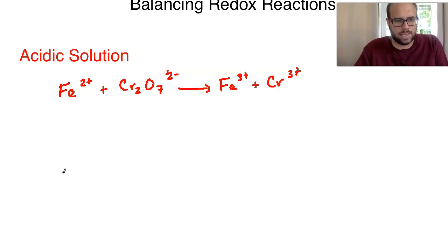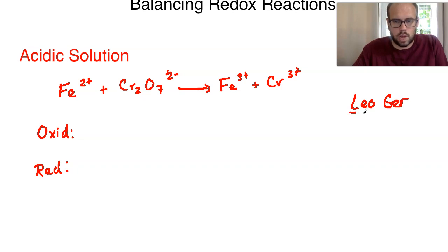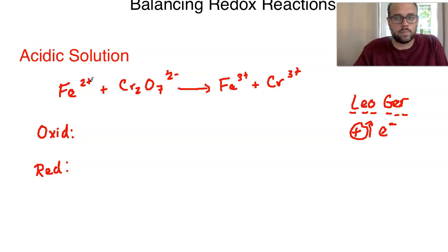In order to balance this, we are going to start by breaking it down into the half reactions. One portion of this reaction is an oxidation and the other portion is a reduction. It's important to remember what oxidation and reduction mean — I prefer LEO GER. The point is that loss of electrons is oxidation and gain of electrons is reduction. Electrons are negatively charged, which means positive charge will increase as electrons are removed or lost.